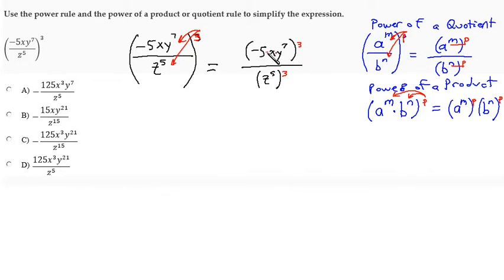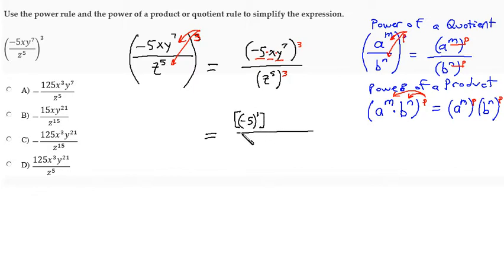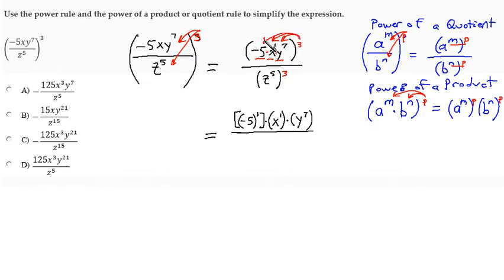We actually have three factors in the numerator product inside the parentheses. The product rule says to give each one of the three factors its own set of grouping symbols. I'll put negative five inside parentheses and raise it to a power of one, capturing the negative sign. x has its own exponent of one and gets its own grouping symbols, and y to the seventh gets its own set of grouping symbols. The outside power distributes to each of those factors.